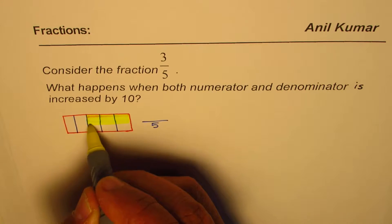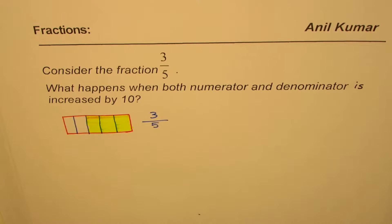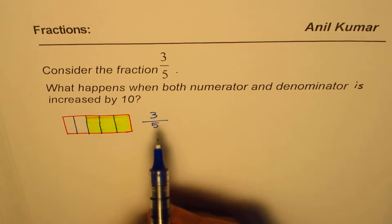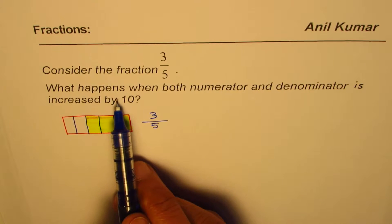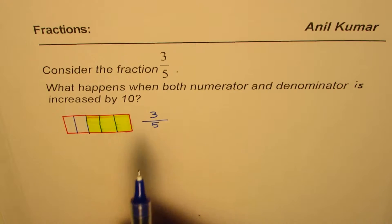So we will select these 3. So we have selected 3 out of 5, you get an idea? So we have selected 3 out of 5, so that much portion is 3 out of 5. Now the question is, what happens when both numerator and denominator is increased by 10?